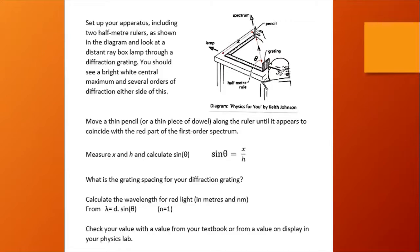If you move a thin pencil or a thin piece of dowel along the ruler, do it until it appears to coincide with the red part of the first order spectrum. You might find it more helpful to have a friend to do this movement of the dowel or the pencil for you. We can measure x and h and calculate sine theta because sine theta is opposite over hypotenuse. Now you could also find theta knowing the opposite side of that triangle x and the adjacent side which is 0.5 meters.